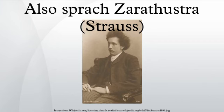Also Sprach Zarathustra, Op. 30, is a tone poem by Richard Strauss, composed in 1896 and inspired by Friedrich Nietzsche's philosophical novel of the same name. The composer conducted its first performance on November 27, 1896 in Frankfurt. A typical performance lasts half an hour. The work has been part of the classical repertoire since its first performance in 1896.